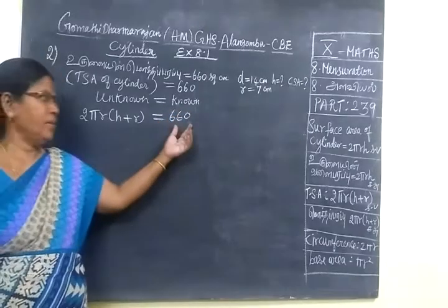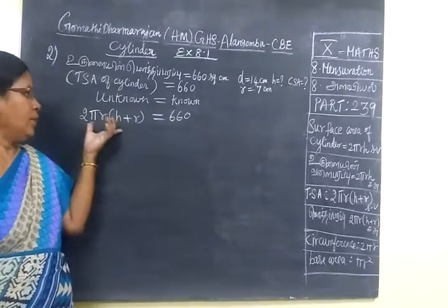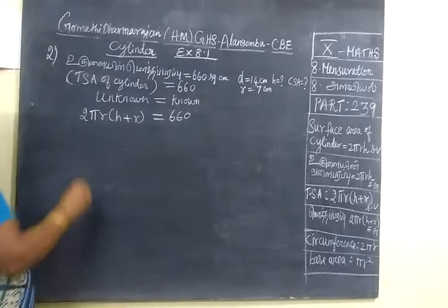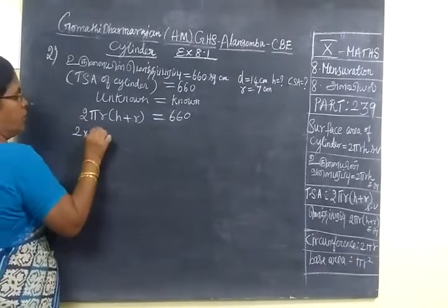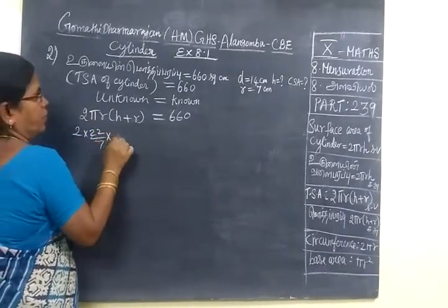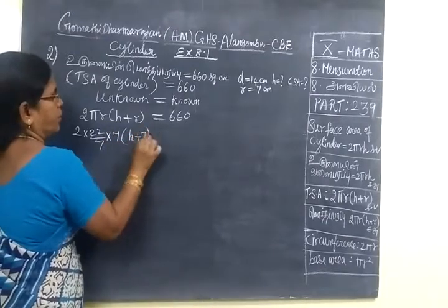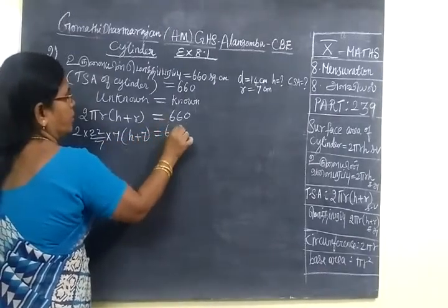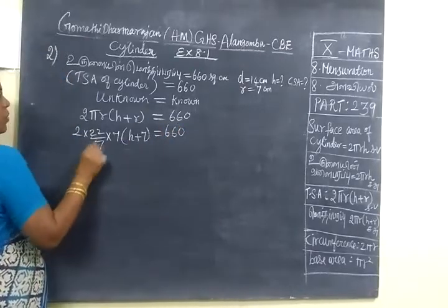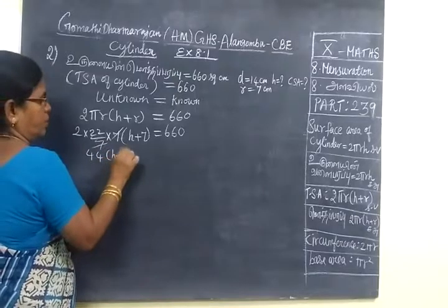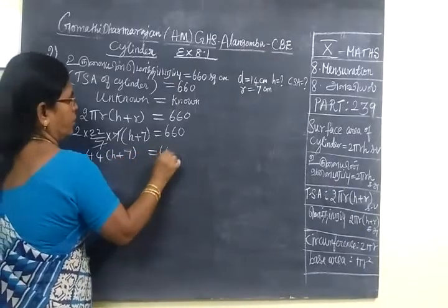If the answer is given, we are writing the formula this side and write the answer here. So 2 into 22 by 7, 7 by 7, h plus 7 equal to 660. So this gives 44 h plus 7 equal to 660.